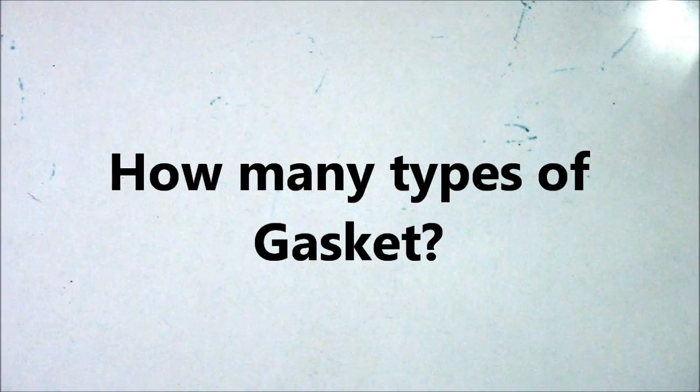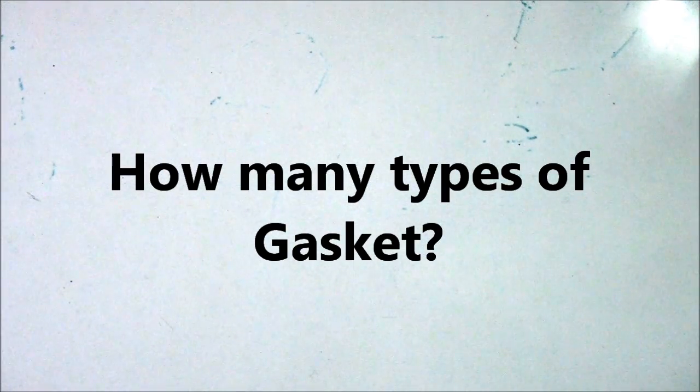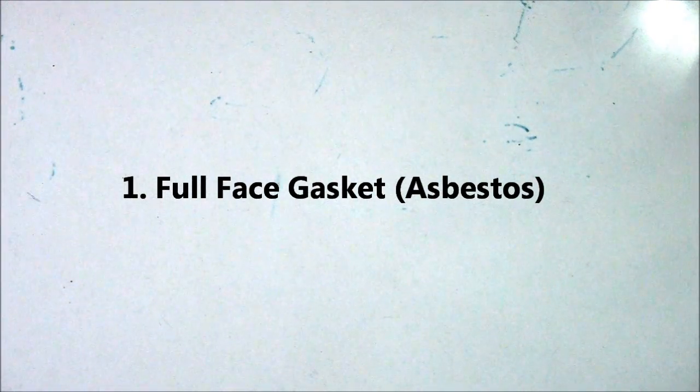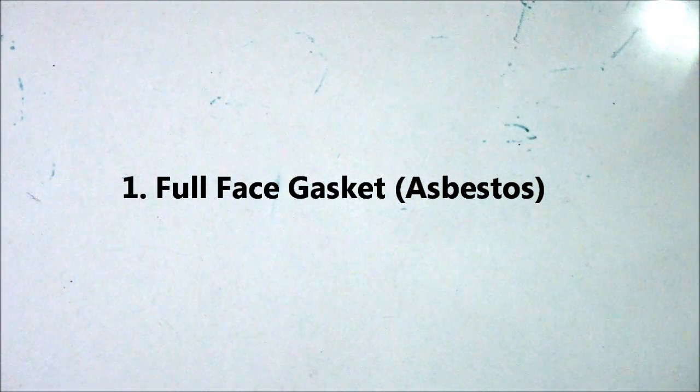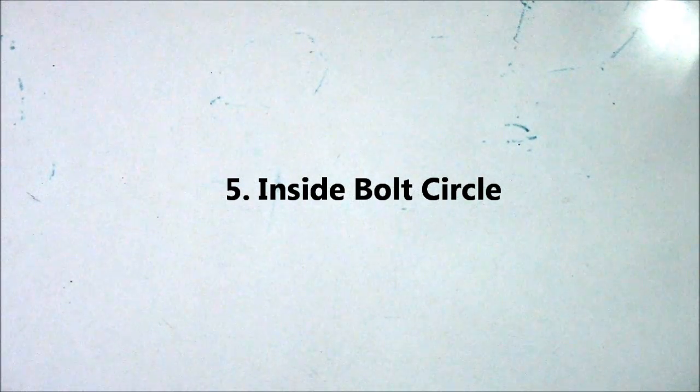We have five types of gaskets: number one, full-face gasket (asbestos); number two, spiral wound or metallic gasket; number three, ring type; number four, metal jacketed; and number five, inside bolt circle. Please take note of these five types of gaskets, as they are important.